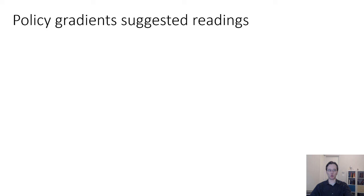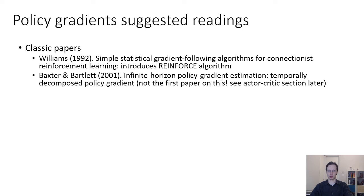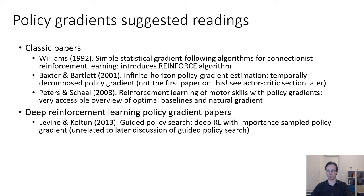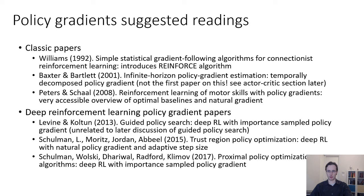If you want to read more about policy gradients, here are some suggested readings. The classical papers, REINFORCE, was introduced in this paper by Williams in 1992. This paper by Baxter and Bartlett introduced what I call the causality trick in the lecture. They call it GPOMDP. This is actually not the first paper to introduce it. I'll actually mention the first paper when I talk about actor-critic in the next lecture. And this paper by Peters and Schaal describes the natural gradient trick with some very nice illustrations. Deep RL papers that use policy gradients: The guided policy search paper that I mentioned before, which uses importance sampled policy gradients. This is the Trust Region Policy Optimization paper. And then the PPO paper. So these would be ones to check out if you're interested in policy gradients for Deep RL. Thank you.